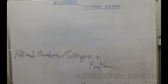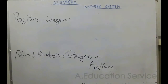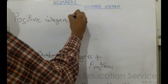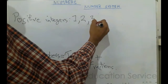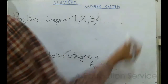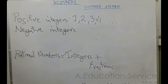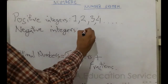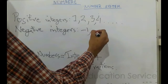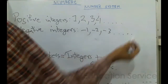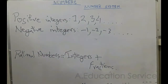Integers are whole numbers. Note that zero is also an integer. Positive integers are all positive whole numbers excluding zero, such as one, two, three, four, and more. Negative integers are all negative whole numbers excluding zero, such as minus one, minus two, minus three, and more. Zero is also an integer but does not belong to either the positive or negative integers group.